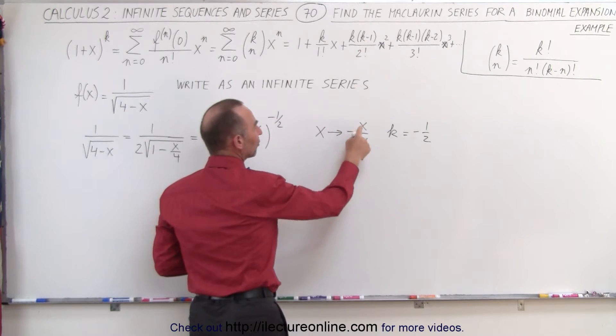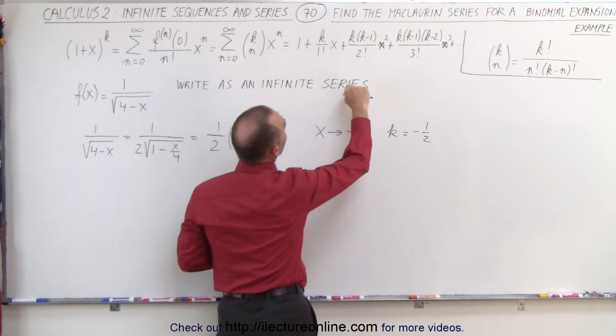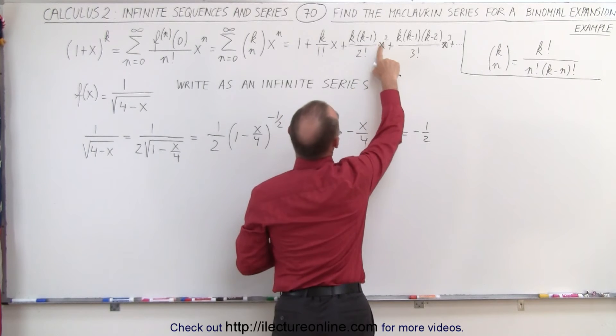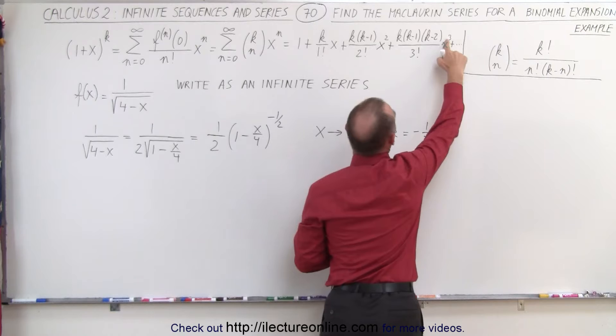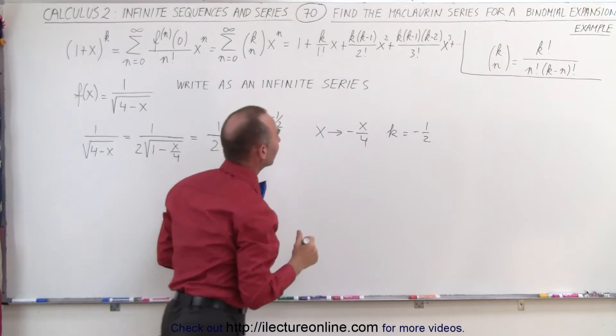If we plug in minus x over 4 for every x in the—oh wait a minute this is not quite right is it? This should be an x squared and this should be an x cubed. I just saw that. All right.